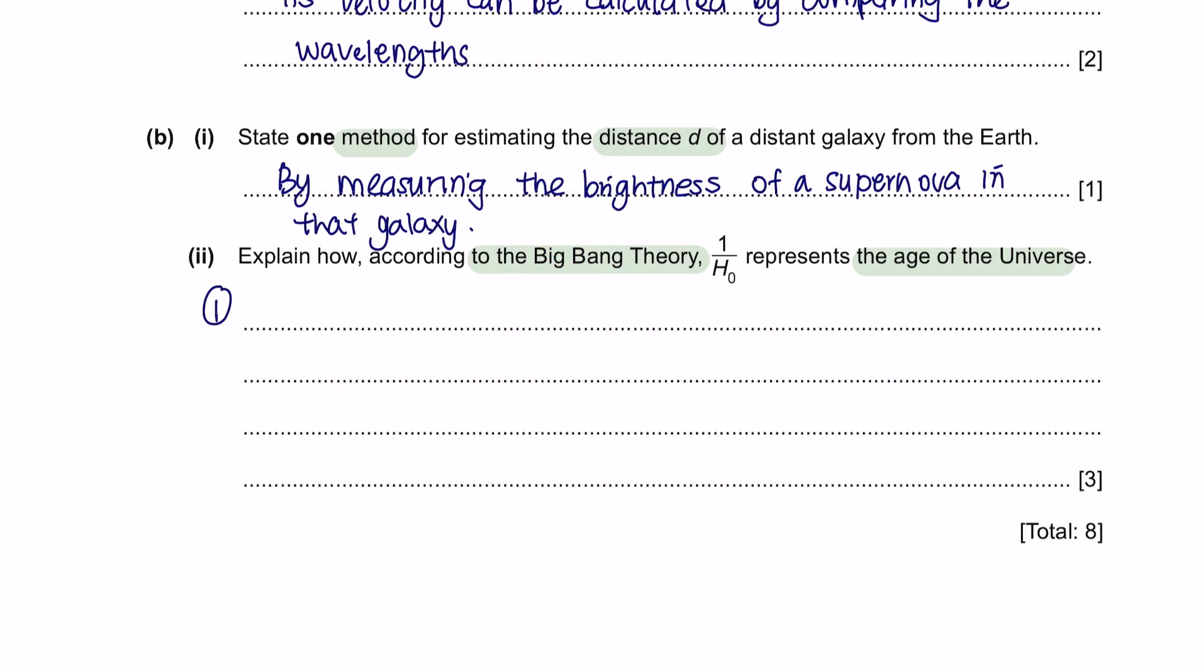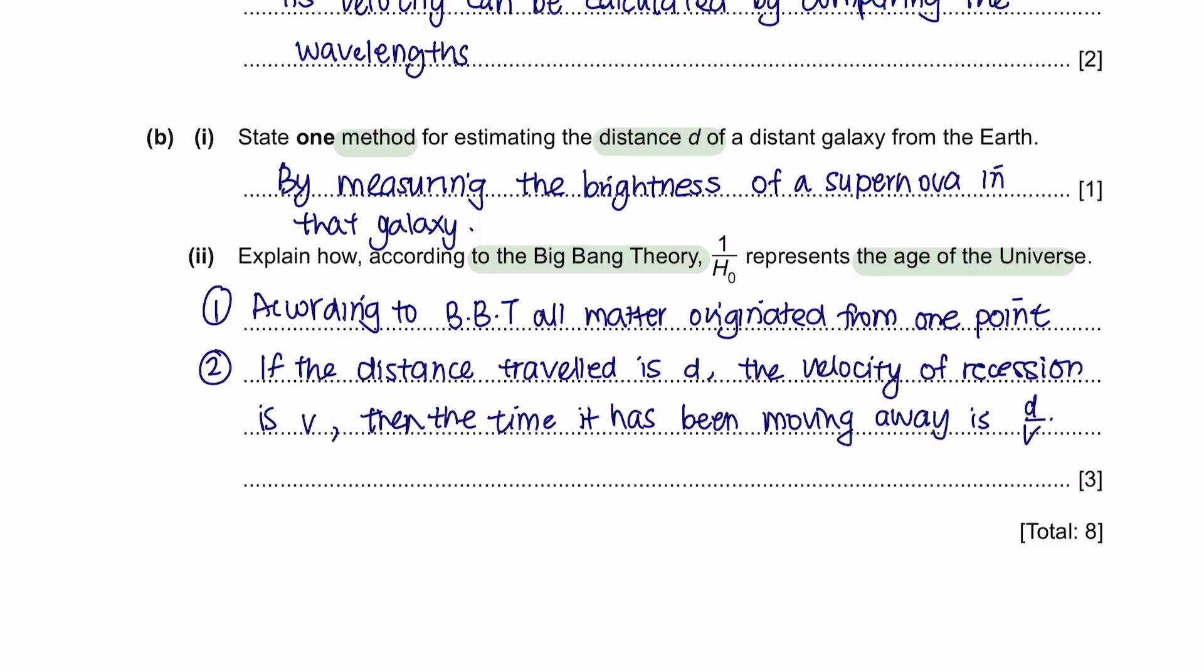If the distance a galaxy has travelled is d and the speed it has been moving is v, the time it has been moving is d over v. The equation d over v is 1 over H0, and this gives us the time from when the universe began, approximately 13 to 14 billion years ago. According to Big Bang theory, all galaxies originated from one point in space and time. If distance travelled is d and velocity of recession is v, then time is d over v. This equation d over v is 1 over Hubble constant, which is the time from when the universe began.